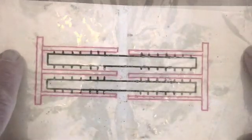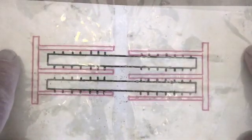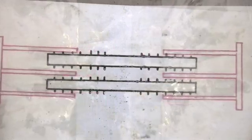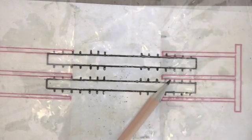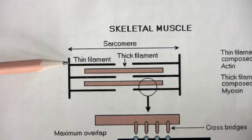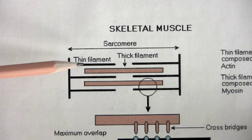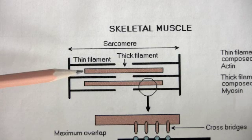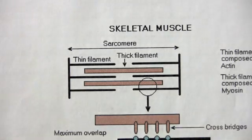Contraction, relaxation, elongation. Let's enlarge part of one of the thick filaments and part of one of the thin filaments. Beginning with skeletal muscle — the sarcomere contains thin filaments and thick filaments. The thin filaments are composed of actin and some other molecules, and the thick filaments are composed of myosin. The myosin has the cross bridges, which bind to binding sites on the actin.